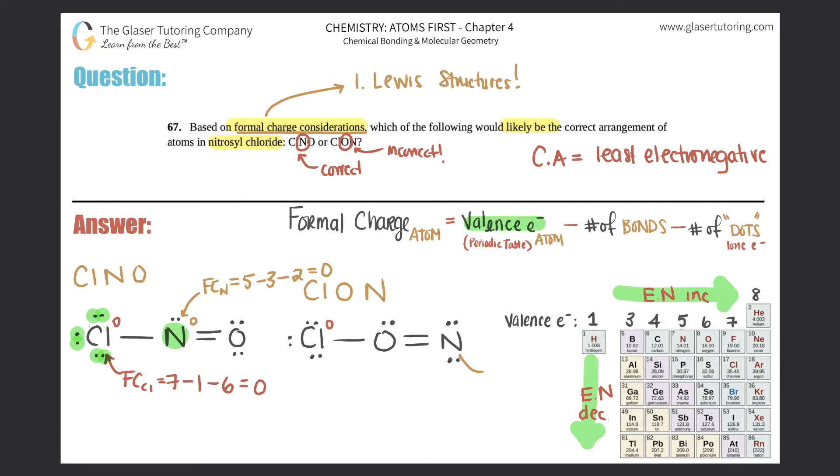Let's do this nitrogen now to just show the difference. Formal charge for nitrogen is valence electrons is five. That didn't change. Minus this nitrogen only has two bonds. So it'd be minus two minus four dots. So minus four. So the formal charge for this nitrogen is five minus two minus four is a negative one.